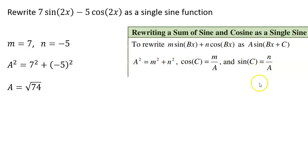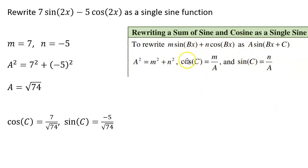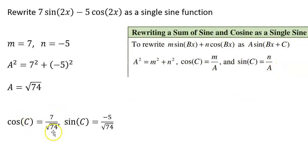Now we need to figure out the phase shift c. We use two equations: cosine of c equals m over a, and sine of c equals n over a. So here, cosine of c is 7 over the square root of 74, and sine of c is negative 5 over the square root of 74.